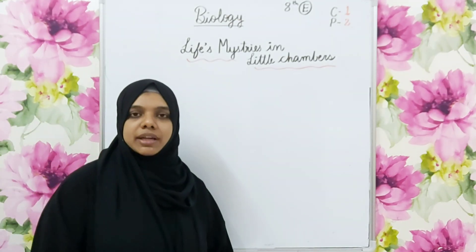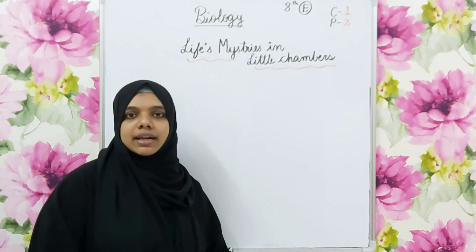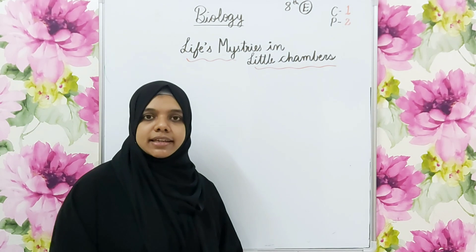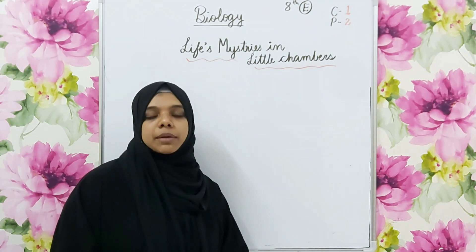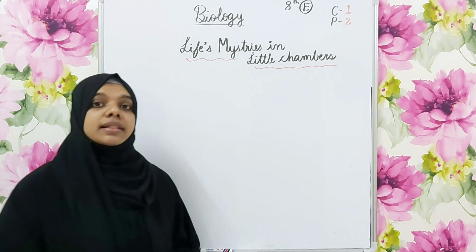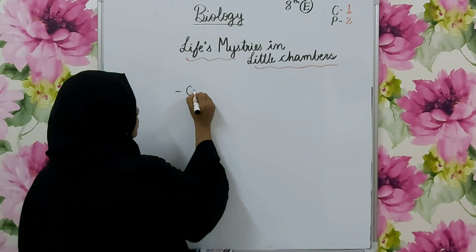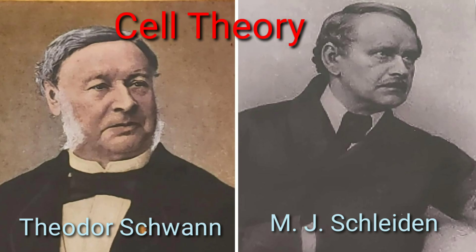We have already studied this chapter in the first part — microscopy and how microscopy slides are prepared. We also studied various scientists, leading to the Cell Theory, which was formulated by M.J. Schleiden and Theodore Schwann, summarizing the findings of various scientists.